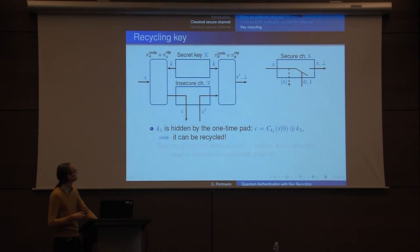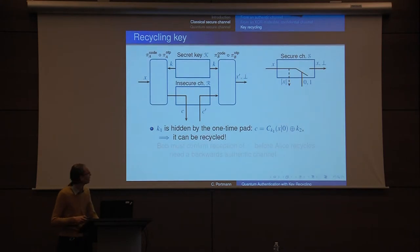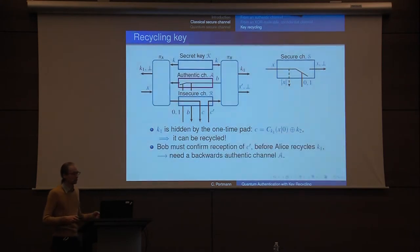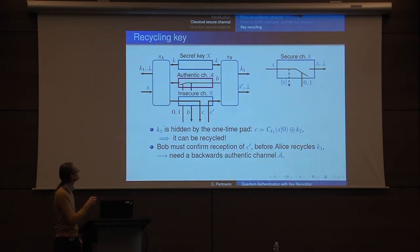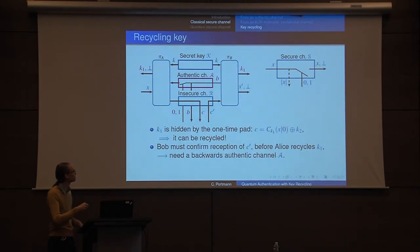Still in the classical case, we can recycle key. We've one-time padded the cipher with K2, so K1 is completely unknown and can be recycled. But when do we recycle K1? This is an important point. If Alice recycles K1 too soon — say before Bob receives C′ — it might leak to Eve in another application, allowing Eve to know how to change the cipher. So the key can only be recycled after Bob has received C′.